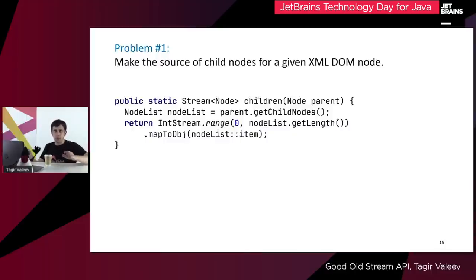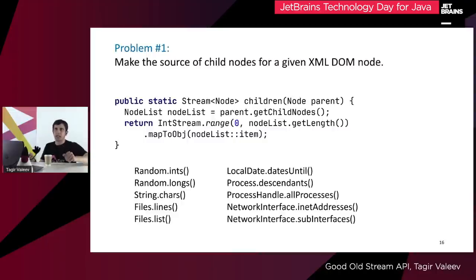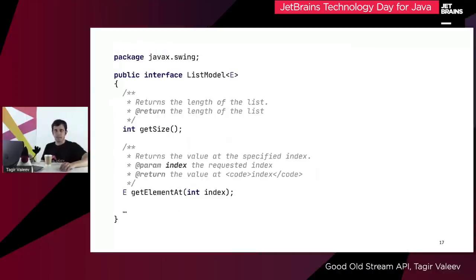By the way, note the method name — it's not getChildren and not stream, it's simply children. There is a convention to name methods that return a stream using a plural noun, sometimes with an adjective. It's not a good idea to name such a method 'stream' unless you have a very abstract container. This approach allows you to stream any data container that provides its total number of elements and quick random access by index. For example, if you happen to use Swing, you have a ListModel interface that provides its overall size and the element at a given index — everything you need to stream elements of the list model.